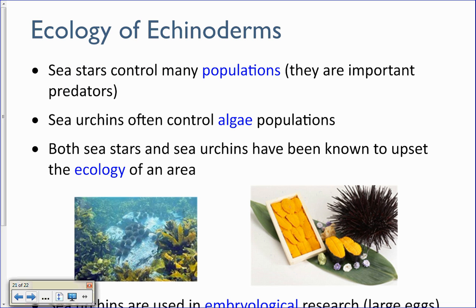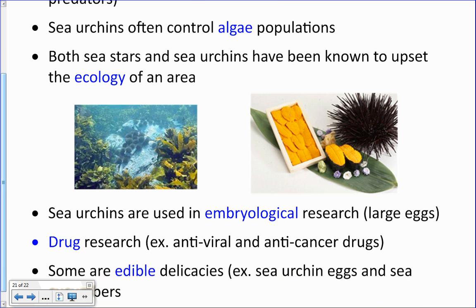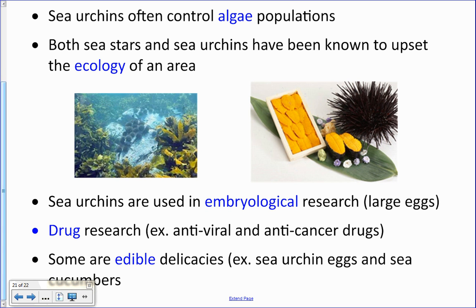Ecology of sea stars and echinoderms: sea stars control many different populations and are important predators — in many ecosystems they can be top predators. Sea urchins help control algae populations, but both sea stars and sea urchins have been known to upset the ecology of an area if their numbers get too large. Sea urchins are also valuable in embryological research because their large eggs are easy to observe. These animals are also used in drug research for antiviral and anti-cancer drugs, partly because of their regenerative abilities.